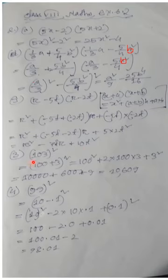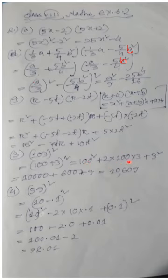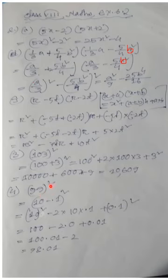Question 3: evaluate using suitable identity. 103² can be written as (100+3)². Using (a+b)² = a² + 2ab + b², with a=100 and b=3: 100² + 2×100×3 + 3² = 10,000 + 600 + 9 = 10,609.